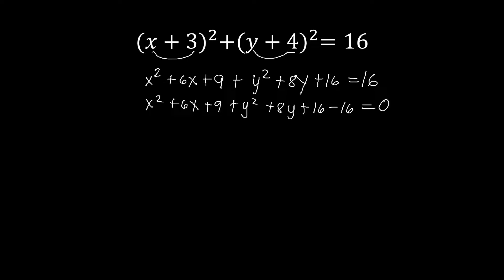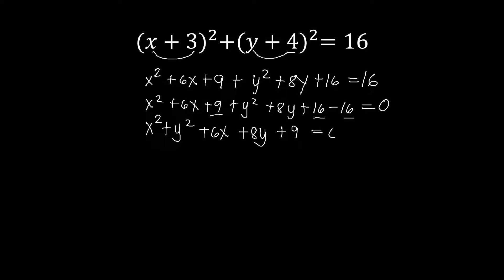Now, combining those constants and rearranging so that x squared comes first, followed by y squared, then the term containing x — plus 6x — then the term containing y — plus 8y. Then combining the constants: 9 plus 16 minus 16. Since 16 minus 16 is 0, we're left with plus 9. That's equal to 0. This is now our general form of the equation.